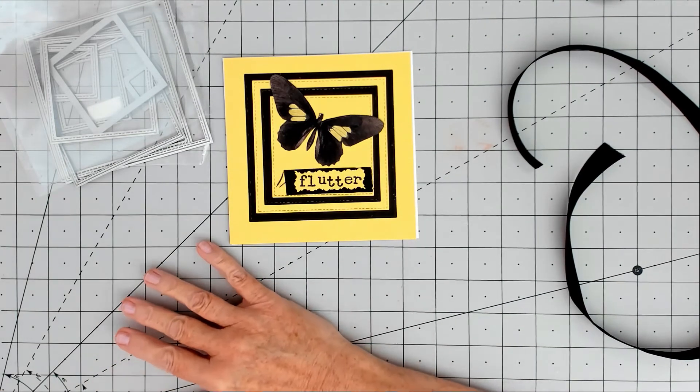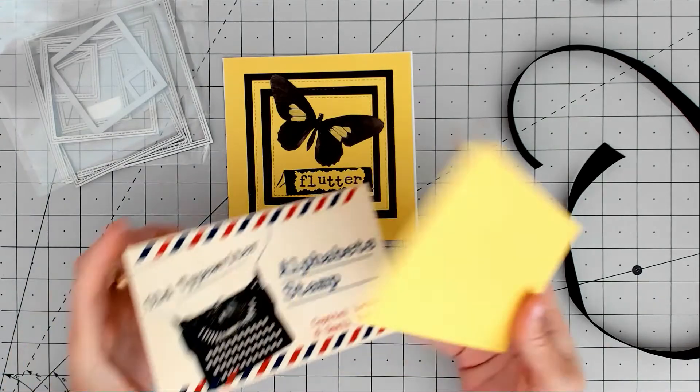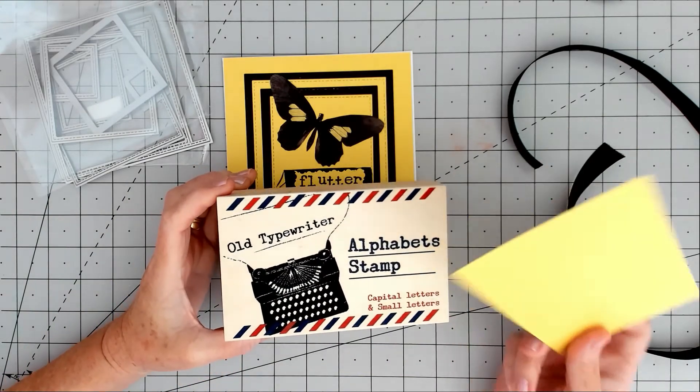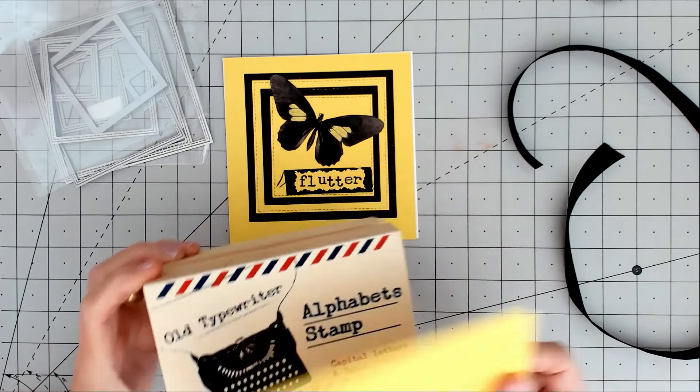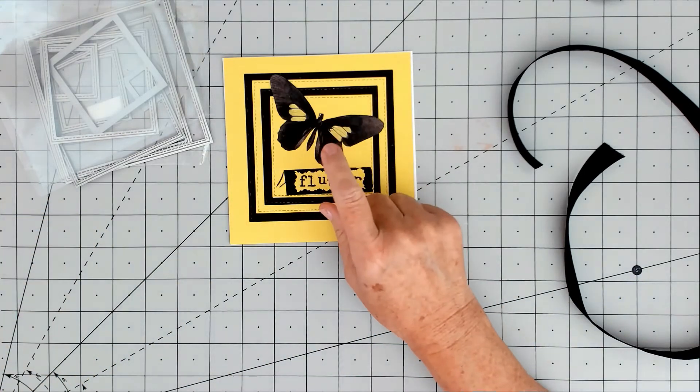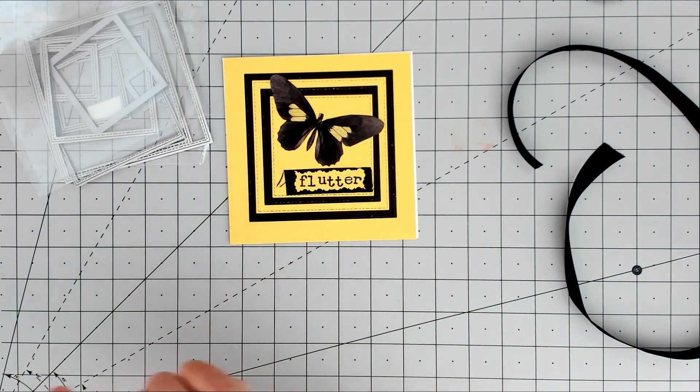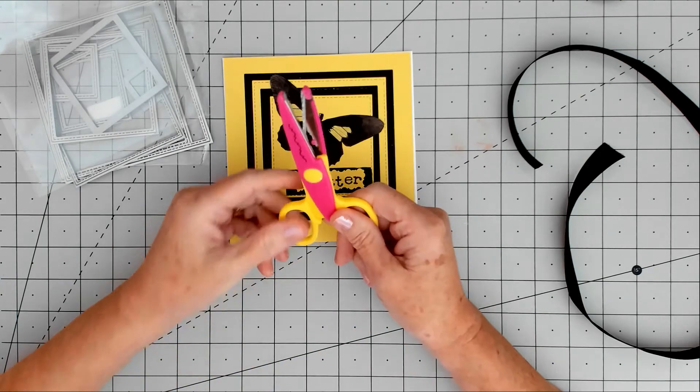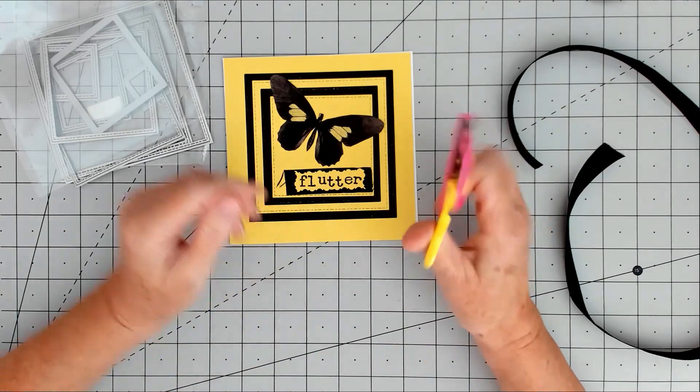I stamped it out with my alphabet stamp set, and then I cut it round with a pair of decorative edge scissors.